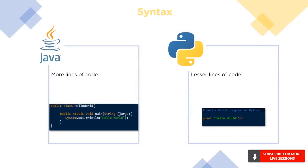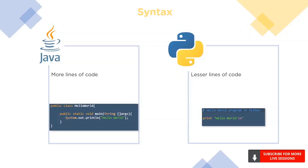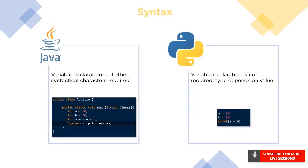Next up is syntax. Python has a clear advantage when it comes to the amount of code we have to write for performing the same task. You can see how simple it is to print a Hello World in Python when compared to Java. Python automatically sets the type of a variable according to its value, whereas Java needs the type of variable to be defined before the compilation of the code.